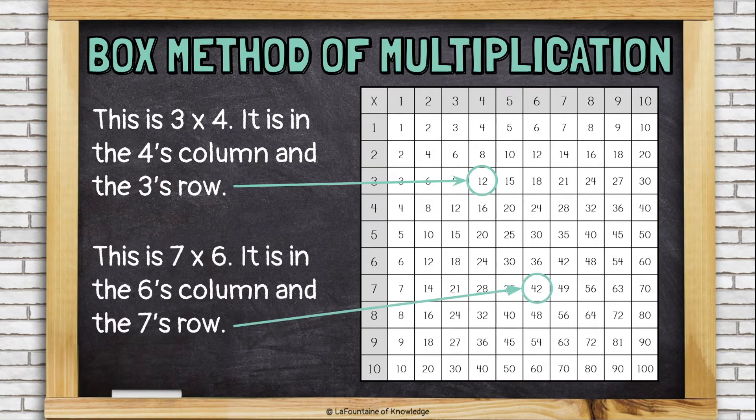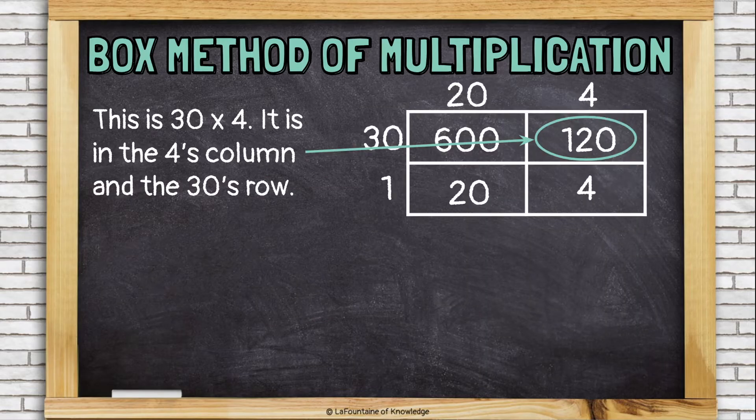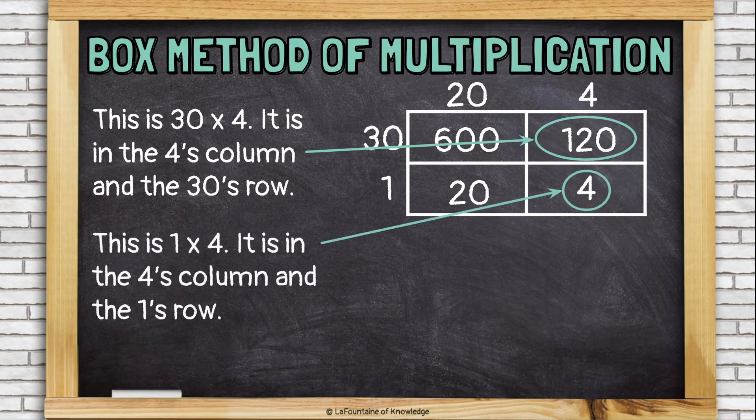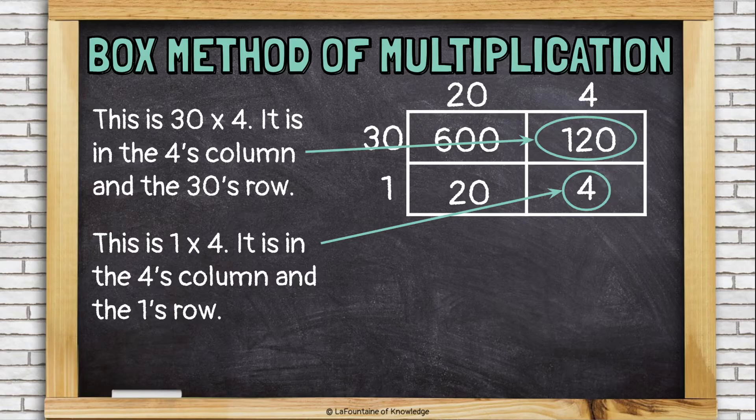This is 7 times 6. It's in the 6's column and the 7's row. It works the same in the box method. This is 30 times 4. It's in the 4's column. It's under the 4. And it's in 30's row. It's next to 30. So, that's where I multiply 30 times 4. This is 1 times 4 because it's in the 4's column and the 1's row this time.